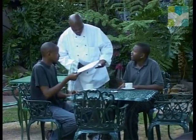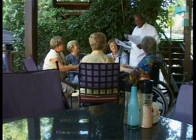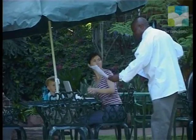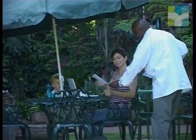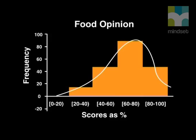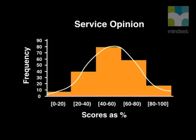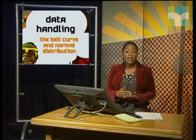Earlier in the series we examined people's opinions of the food in a restaurant and people's opinions regarding service at the restaurant. We found that when we plotted the frequency distributions of the two surveys conducted there, they both produced bell-shaped curves. It is this bell-shaped curve that's called the normal distribution. It occurs often.